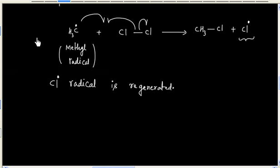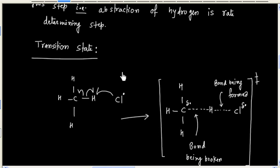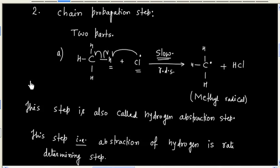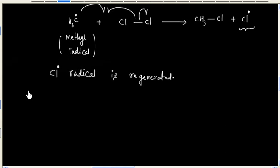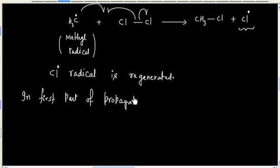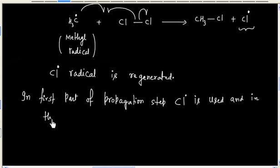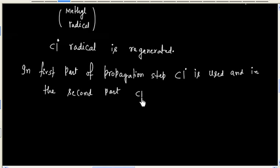So if you see, in the first part of the propagation step, the chlorine radical is used up, and in the second part, the chlorine radical is regenerated.